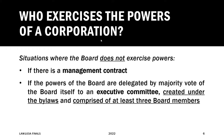There are situations where the Board does not exercise corporate powers, like if there is a management contract. A management contract is a contract or agreement which designates who gets to exercise corporate powers for the corporation. As we learned in obligations and contracts, the contract is the law between the parties. So unless there are stipulations contrary to law, good customs, morals, public order, or public policy, those stipulations must govern, must be honored, and must be followed in good faith.